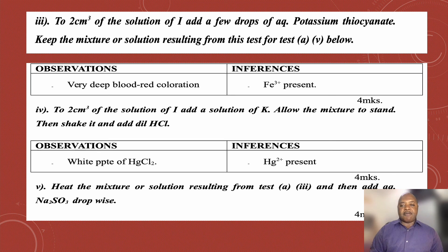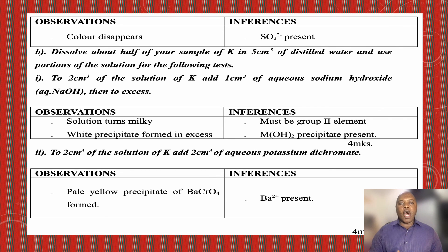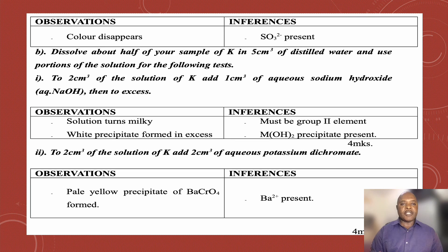Test A5: heat the mixture of solution resulting from Test A3, then add aqueous sodium sulfite dropwise. My observation was that the color disappears. The ions found there were sulfite ions present in the solution.